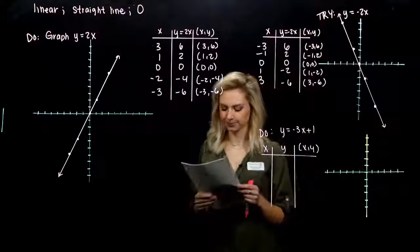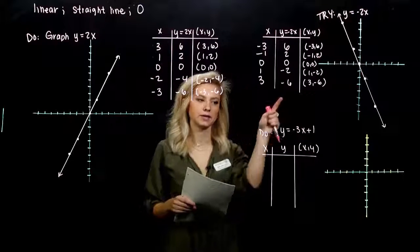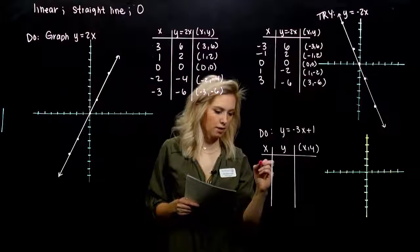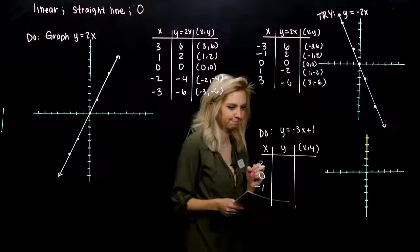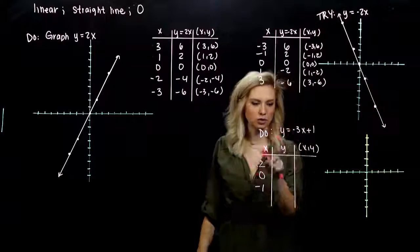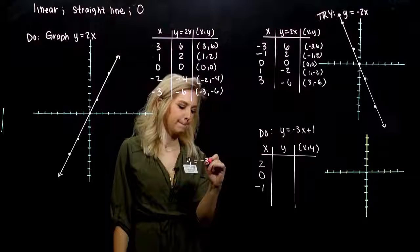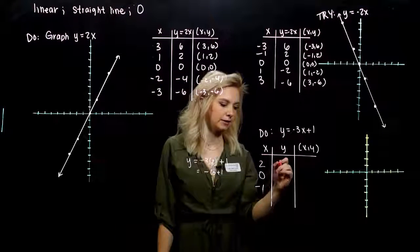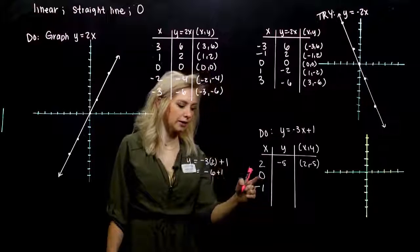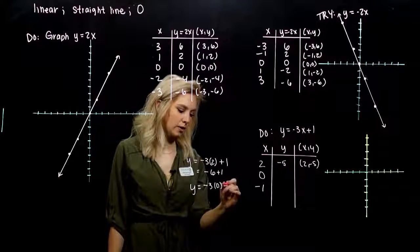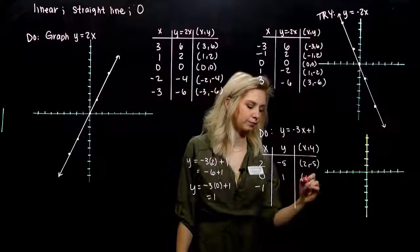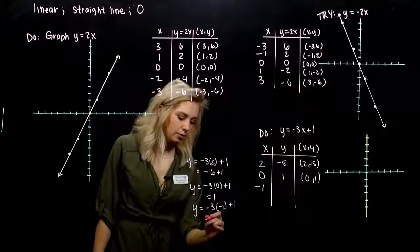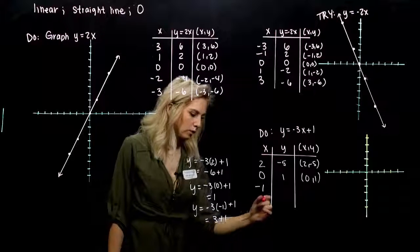The last one we want to graph now is different because we have a constant on the back. But the concept is still the same — we can choose any x values we want. I'll pick 2, 0, and minus 1. When I plug in 2, I get minus 3 times 2 plus 1, which is minus 6 plus 1 equals minus 5. When I plug in 0, that term goes away and I'm left with 1, so the graph goes through (0, 1). When I plug in minus 1, a minus times a minus gives a plus, so I get 4.